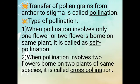Transfer of pollen grains from anther to stigma is called pollination. Types of pollination: First — when pollination involves only one flower or two flowers born on the same plant, it is called self-pollination. Second — when pollination involves two flowers born on two plants of the same species, it is called cross-pollination.